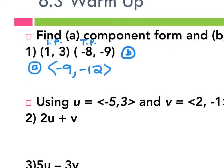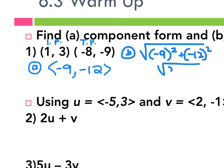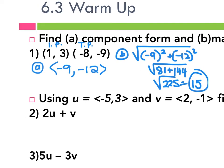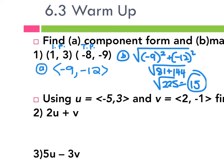B is magnitude. So if I didn't have the component form already, I can do the distance formula, but I already have the component form so I can use the A squared plus B squared shortcut. So I get negative nine squared plus negative twelve squared, which is the square root of 81 plus 144, square root of 225, which simplifies to 15.